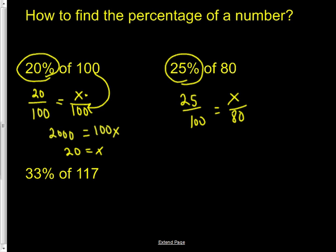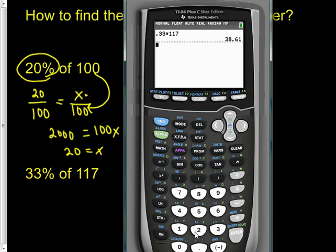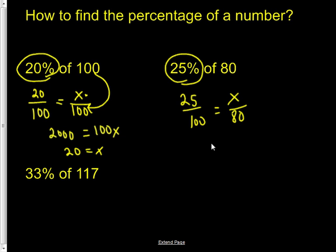So 25 times 80—let's pull up the calculator here. 25 times 80 is 2,000, and 100 times X is 100X. Divide both sides by 100 and yep, it's still 20, just like we learned last time.